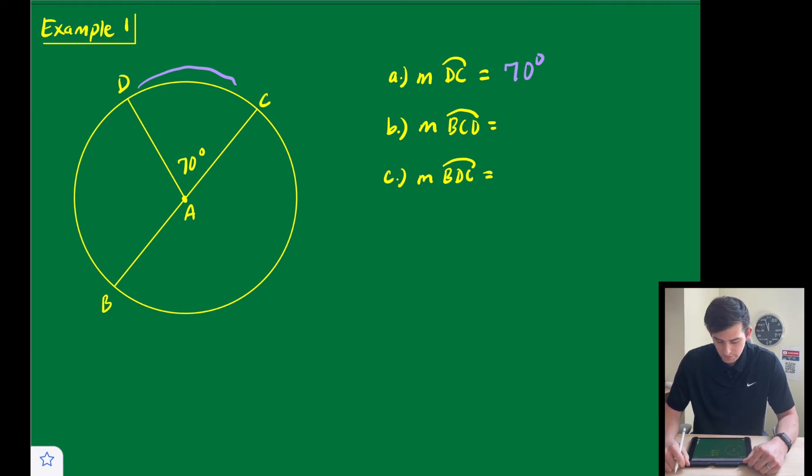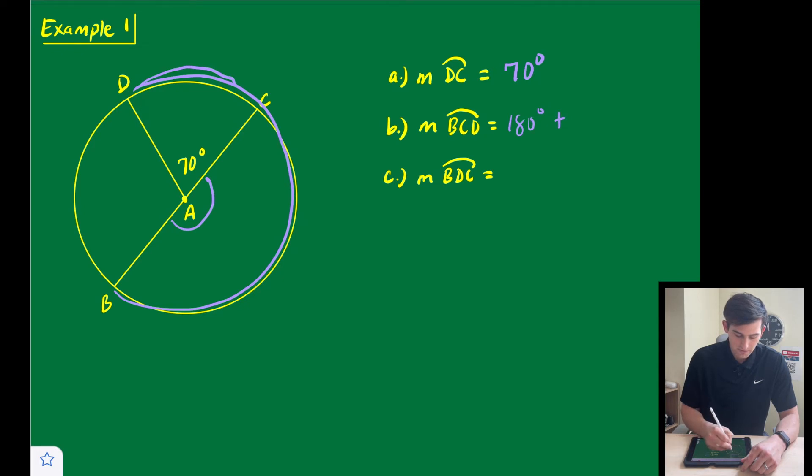And now we're going to find the measure of arc, major arc BCD. And so this is taking into account this arc right here, which is half of a circle, so that's 180, so we're going to say 180, plus our 70 degree angle right here, so we will get 250 degrees.